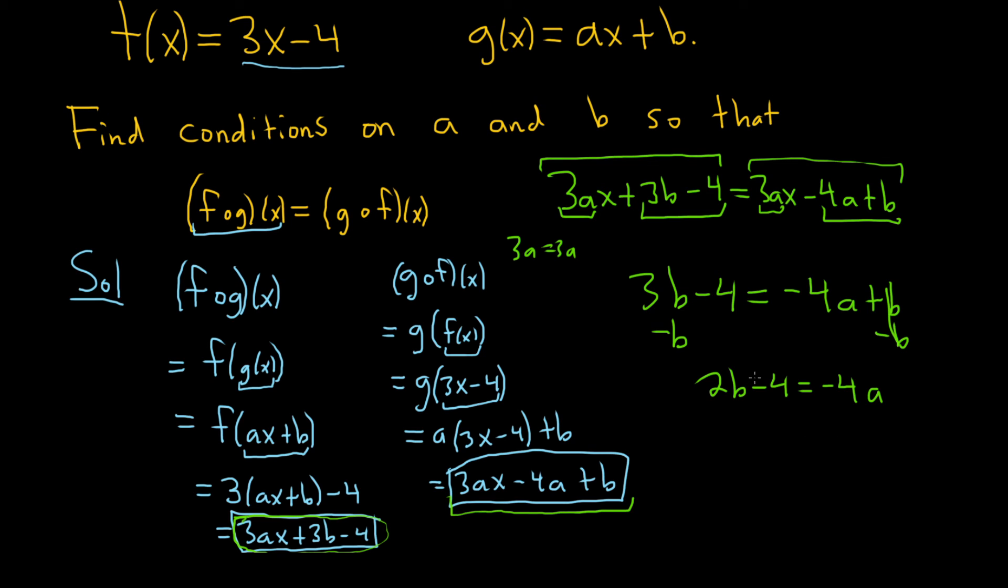So that will give us 2b minus 4 equals negative 4a. And we can divide everything by 2 to make it a little bit better. So let's do that. So dividing this one by 2, dividing this one by 2, dividing this one by 2. Let's see what we get. We get b minus 2 equals negative 2a.